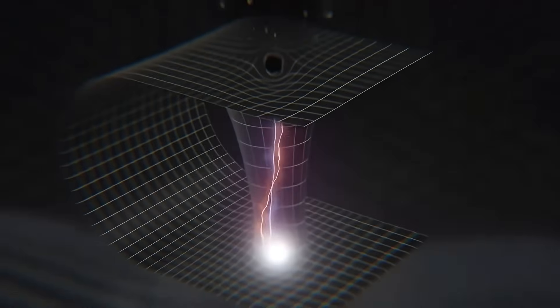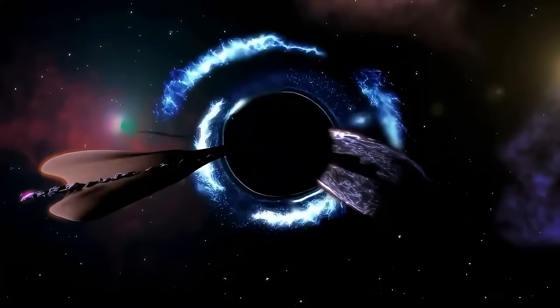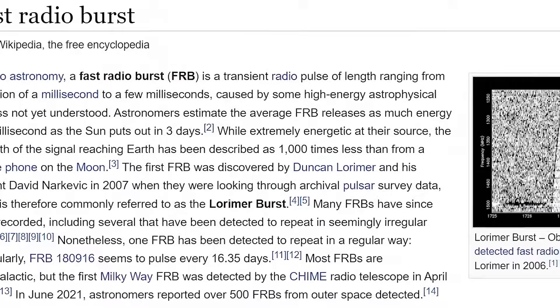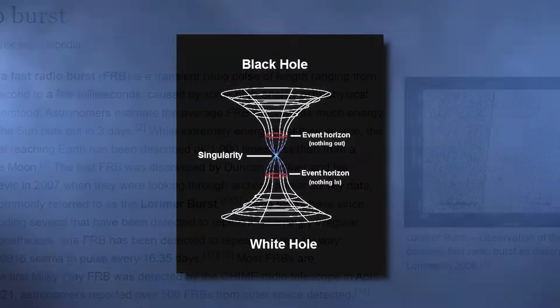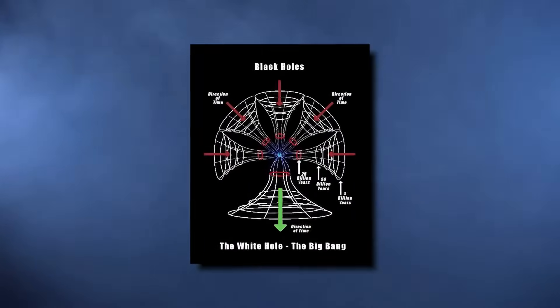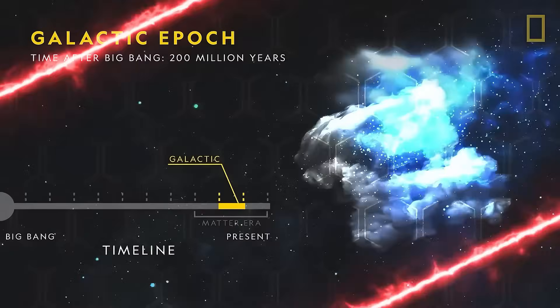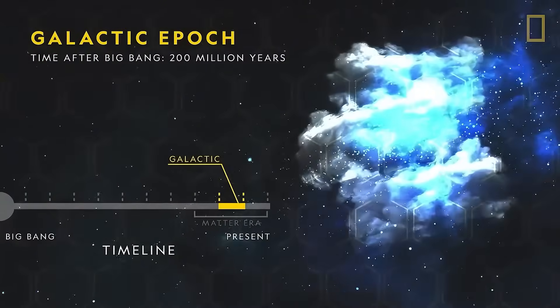Instead of matter being pulled into a dense, compact region, this rift might allow light, and perhaps even matter, to behave unpredictably, bending away from the rift's center instead of towards it. The implications of such an anomaly are immense. If confirmed, it would force scientists to rethink everything from general relativity to the very origins of the cosmos.